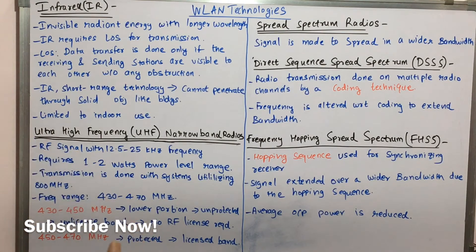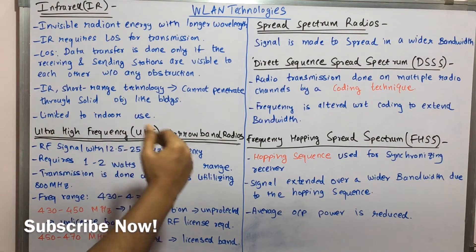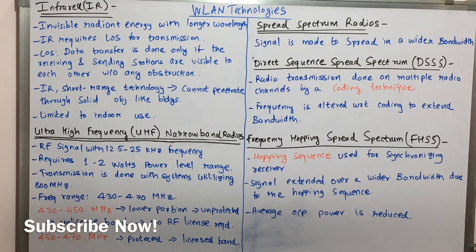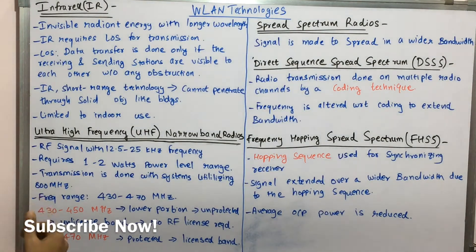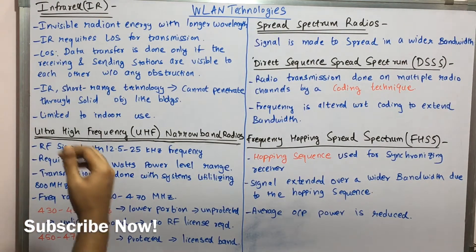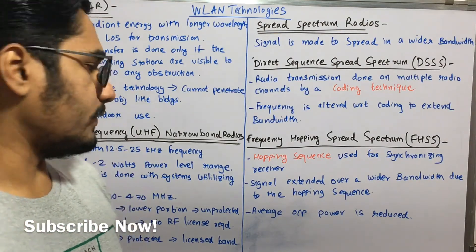The frequency range for UHF is between 430 to 470 megahertz, divided into two parts: the lower portion and the upper portion. The lower portion, 430 to 450 megahertz, is called the unprotected or unlicensed band — no special RF license is required to use it. The upper portion, 450 to 470 megahertz, is the protected band, and you require a license in order to use these frequencies.